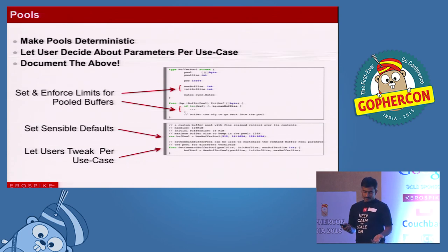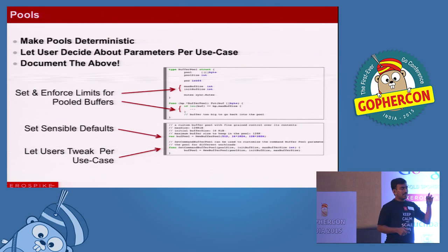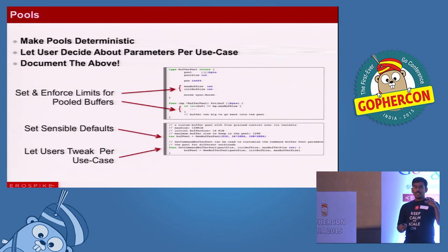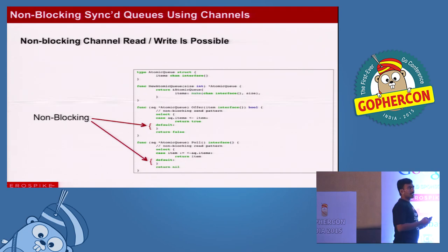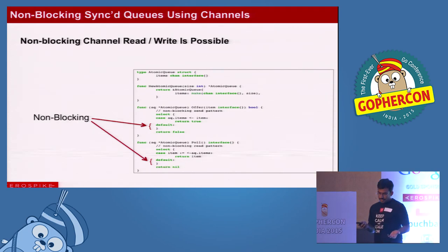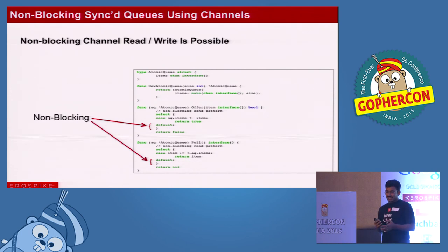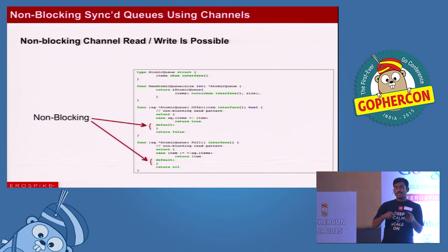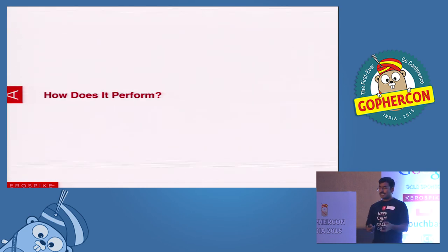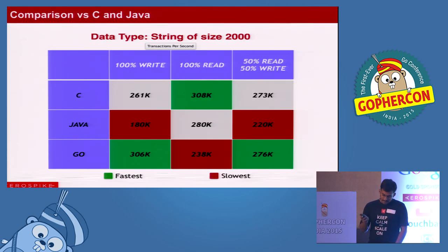Our pools have explicit limits — you cannot put more than a set number of elements or a certain size — and we create many different pools with defaults that users can override. We also have a need for non-blocking operations on channels, which we achieve by putting a select statement over a channel with a default clause. If we're not successful in reading from the channel, we come out with a false and go do some other work, then come back and try again.